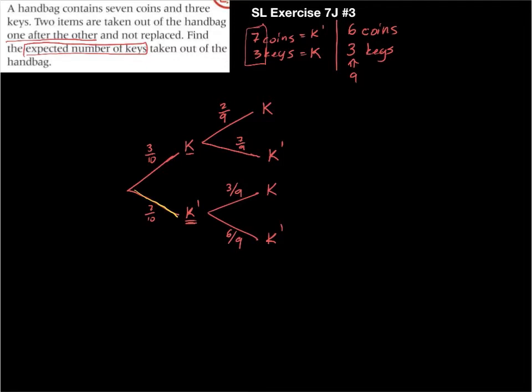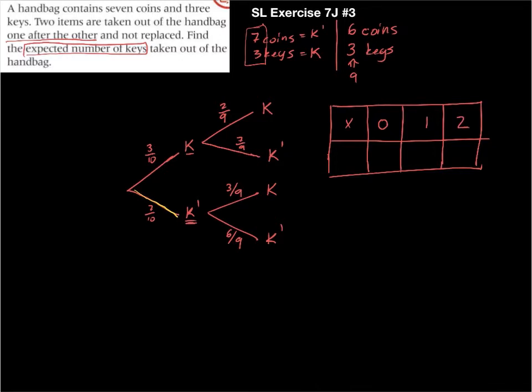Alright, so now we're going to see what the different possibilities are. You should already have an idea of what your probability table should look like, right? So X could be either I'll get zero keys or one key or two keys. Those are the possibilities. Now what are the probabilities of each of those events happening?